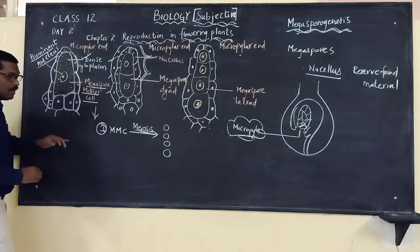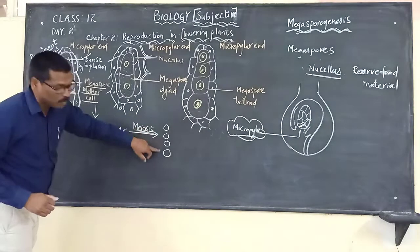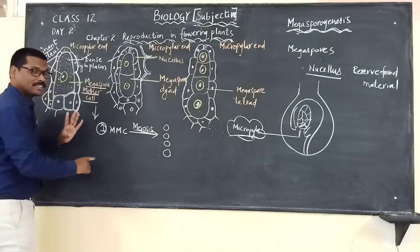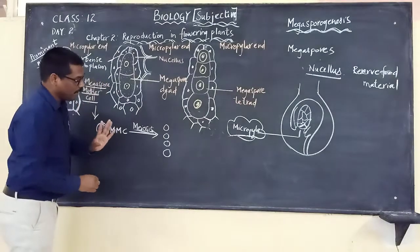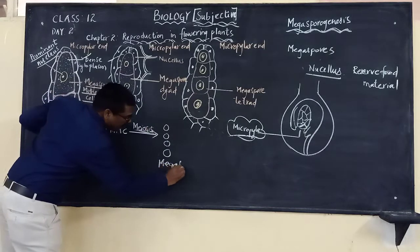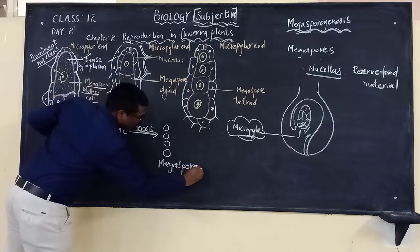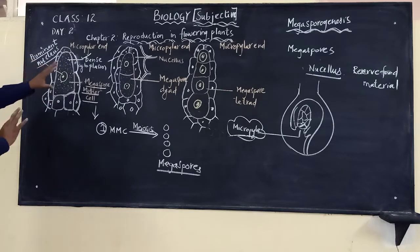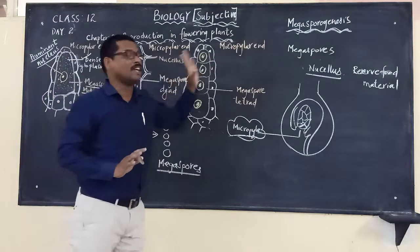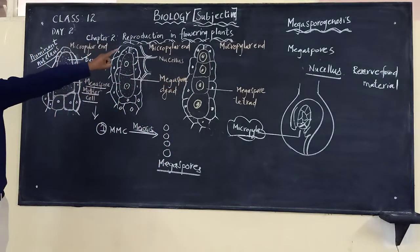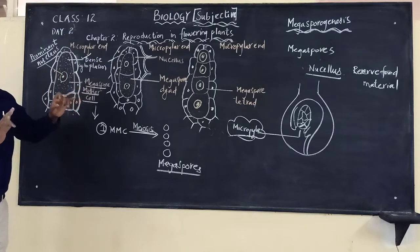The megaspore mother cell undergoes meiosis and produces four cells. One megaspore mother cell, when it undergoes meiosis, produces four cells. All these four cells are haploid and are now called as megaspores. This is what we have to remember when we talk about megasporogenesis.